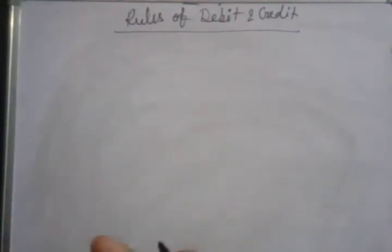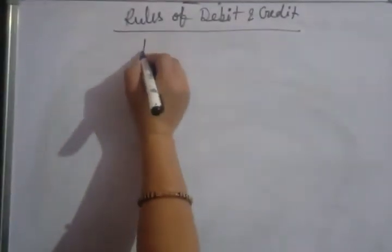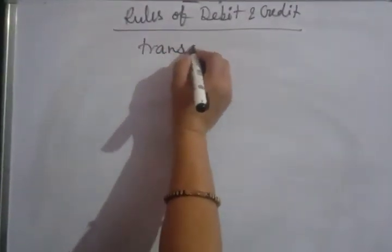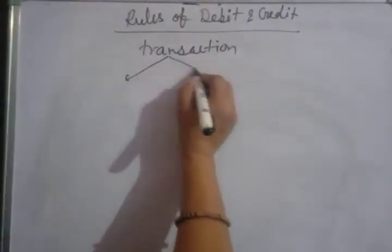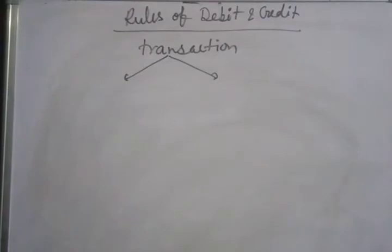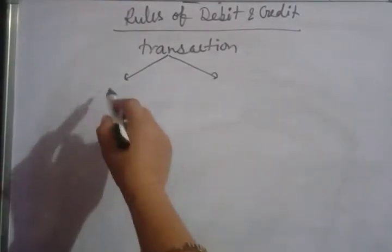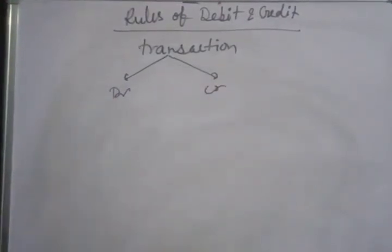As you know, every transaction that takes place has two sides. Each and every transaction affects at least two accounts and has two sides — one transaction affects at least two accounts. We will learn when we will debit and when we will credit.